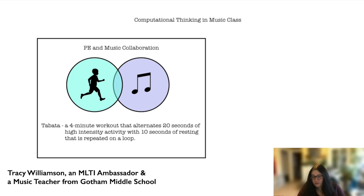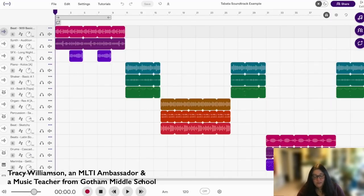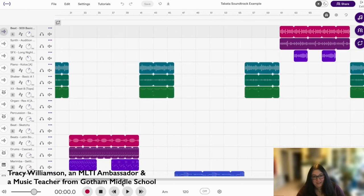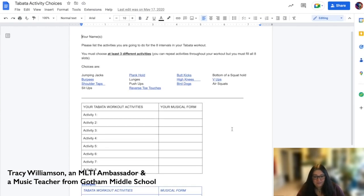Students chose a variety of high-intensity activities — like jumping jacks or running in place — and then had to compose music to match each one. Whatever they chose for their exercise became the form, because if they repeated an exercise, that section of music also had to repeat. The kids recorded a video of themselves doing their Tabata workouts. When they went to PE, the PE teacher played the music out loud — choosing one each day — and the whole class would do the activity along with it. These are just a few examples of ways students practice computational skills in other content areas, particularly music, and away from their computers.